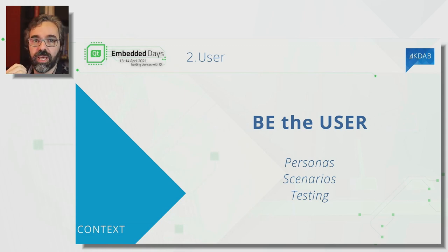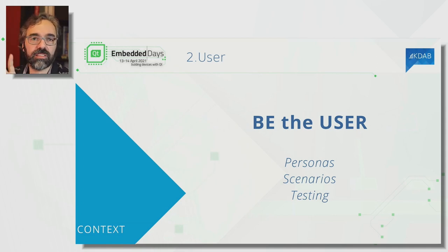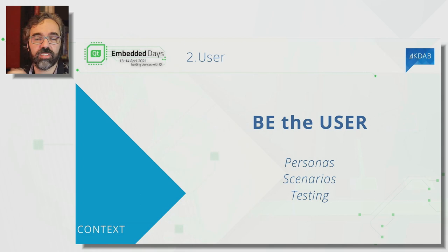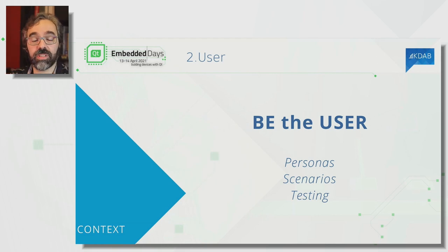The second thing you should do — and it melds nicely with the problem approach — is to be the user. Try to put yourself in the shoes of the user. I kind of create a little person inside of me who is going to use the application, and I start having dialogues — internally and sometimes not so internally — with this hypothetical user. A helpful tool that UX people rely on is creating personas: you pick a distribution of people and select a few individuals that would cover, say, 90% of your user base.